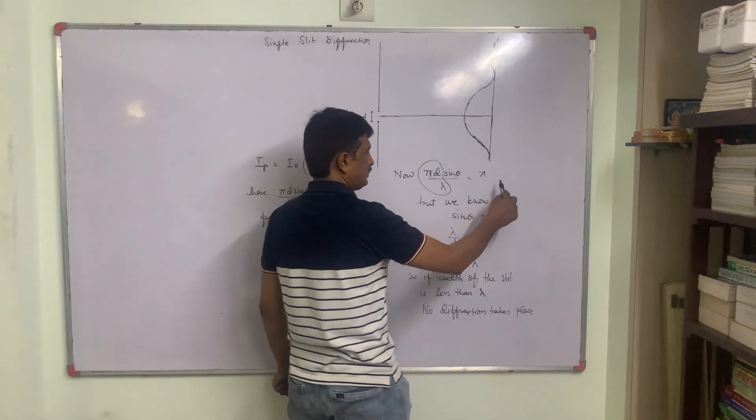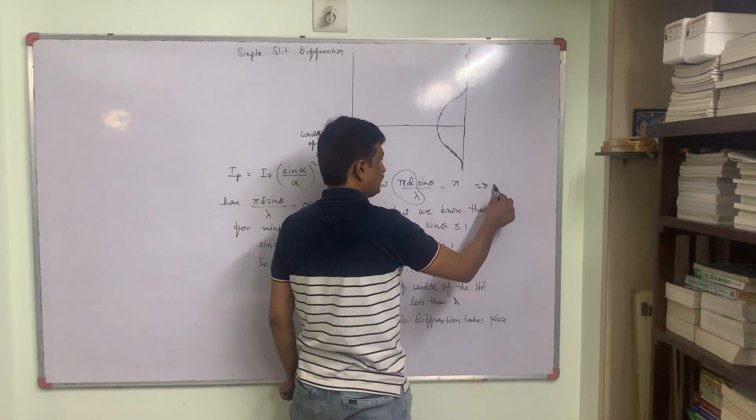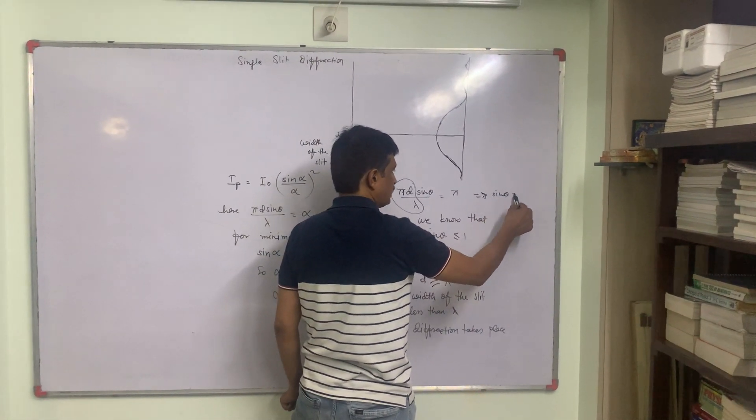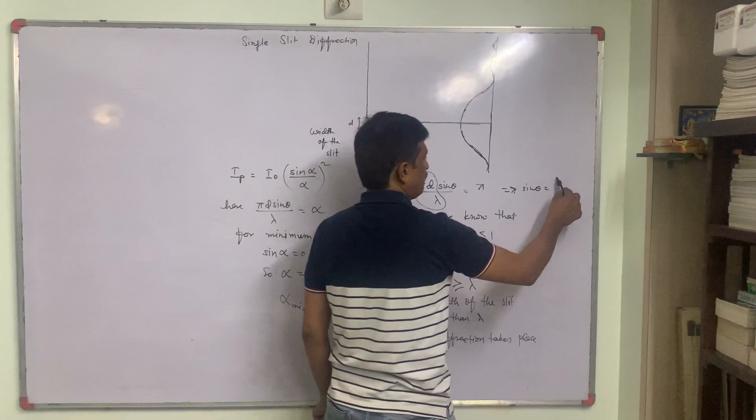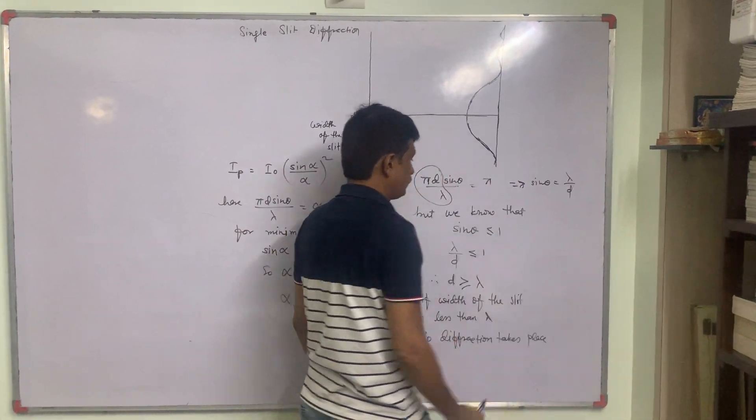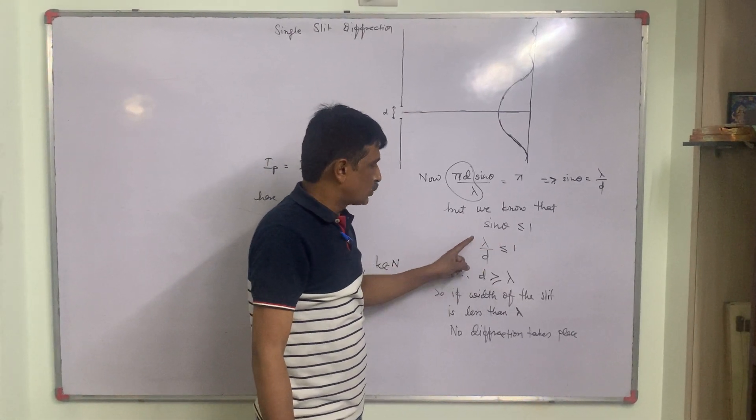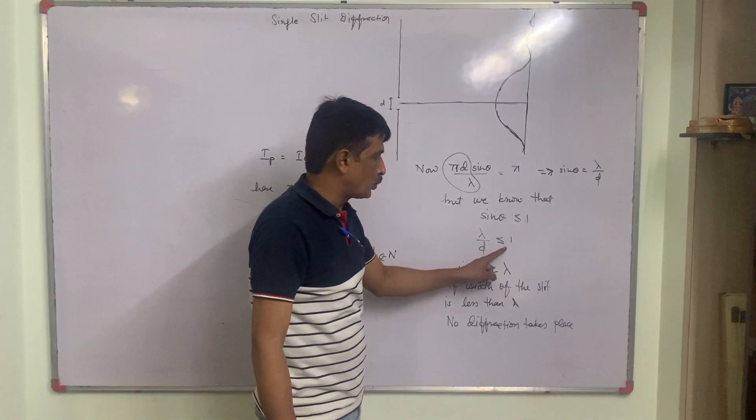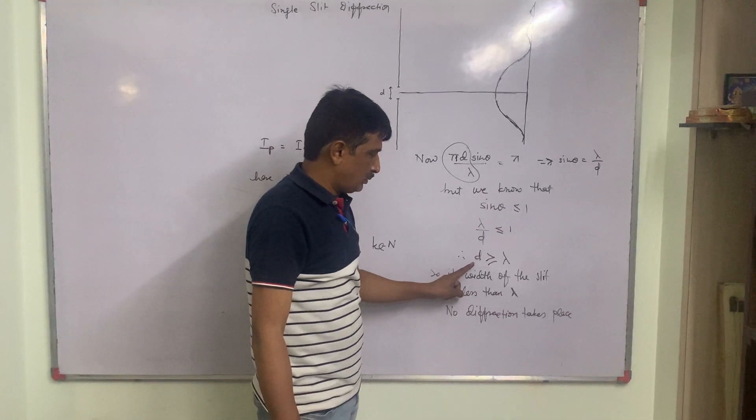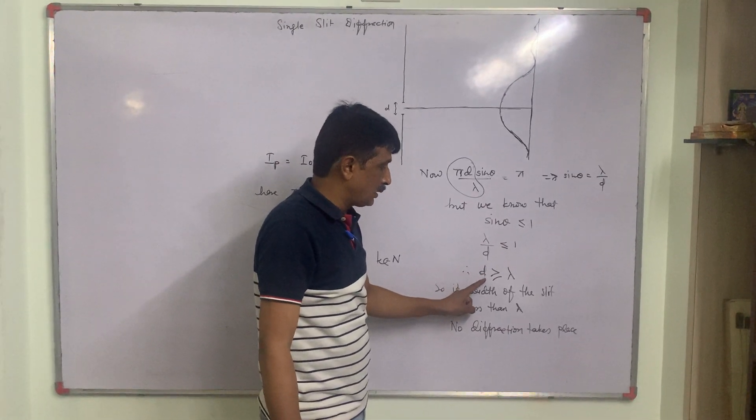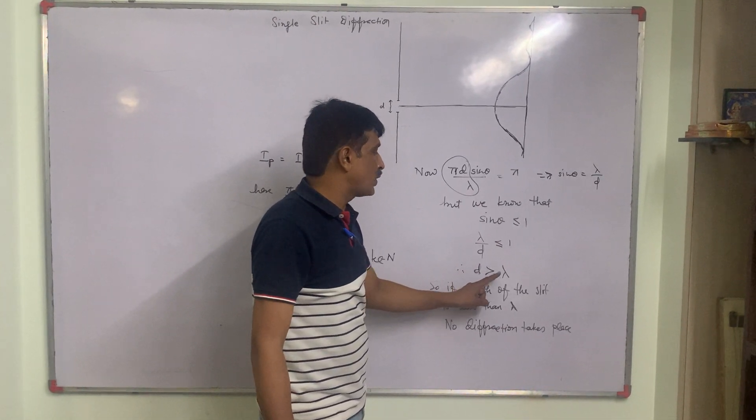So solving for sin theta, we get pi cancels out, lambda by d. But we know that sin theta less than or equal to 1, so lambda by d should be less than or equal to 1. So d, width of the slit, must be greater than or equal to lambda.